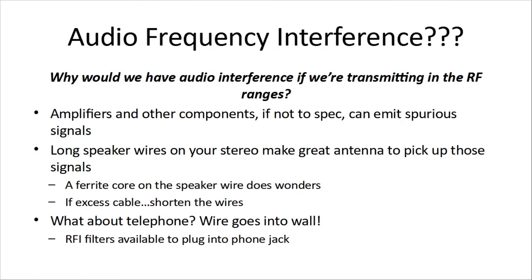Audio frequency interference — a lot of what we're talking about is RF affecting things, but can we have interference at the audio level? Amplifiers and other components, if they're not to spec or there's a problem with them, can emit all kinds of weird signals. Long speaker wires on your stereo make great antennas to pick up those signals. You can put a ferrite core on the speaker wire — that's like a little metal donut you loop the wire through. If your cables are too long or there's a lot of excess line around, shorten them up.